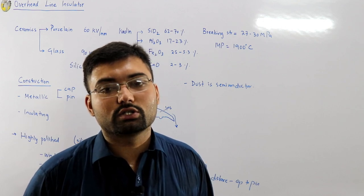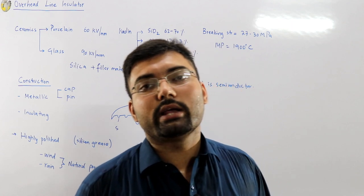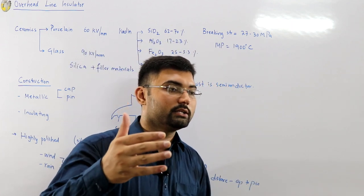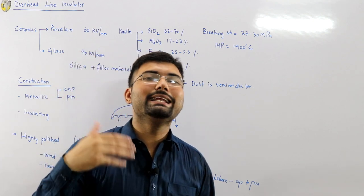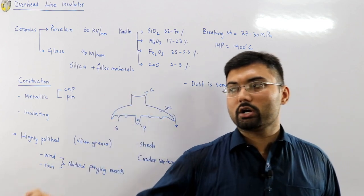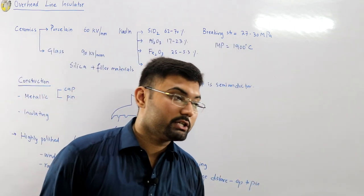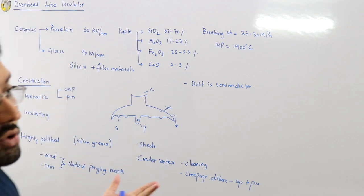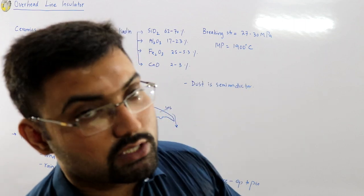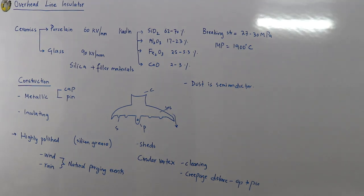To avoid this, live line washing is used in developed countries — jets or pipes installed on towers throw a jet of water on the insulator to clean it, controlled from the substation. In Saudi Arabia and European countries, this is carried out as routine maintenance while power is still being transmitted. In Pakistan, we cannot afford this and can only wait for natural purging events.